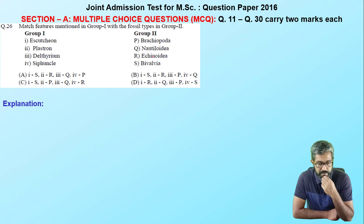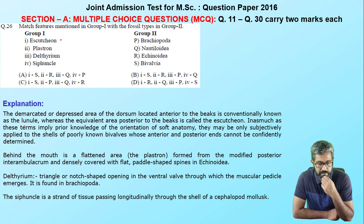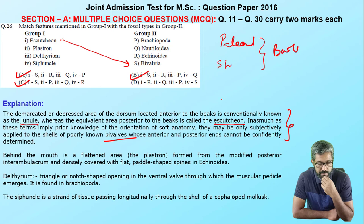Moving to the next question on paleontology — match features in Group 1 with fossil tags in Group 2. Lunule is the depression area of the dorsum located anterior to the beak, whereas the equivalent area on the posterior side is known as the escutcheon. These features belong to Bivalvia. For paleontology and stratigraphy you have to read your book very carefully — it is all related to morphology.